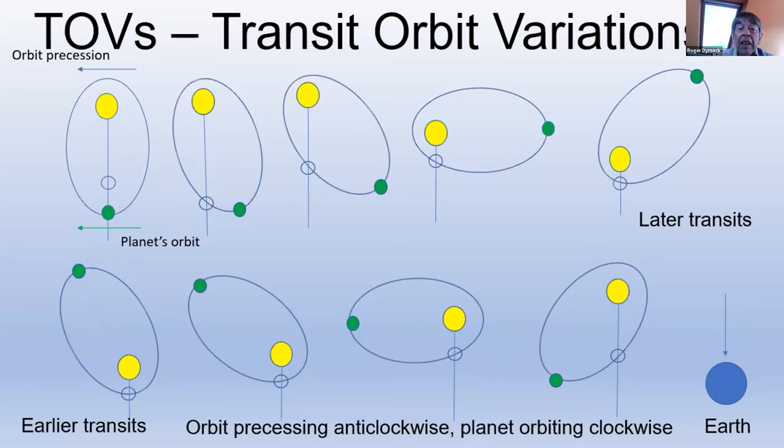In the bottom row, the planet transits earlier than expected, but less early as the orbit precesses. The orbit may also experience changes in its shape, more to less elliptical. So you can get changes in transit times due to precessing orbits.